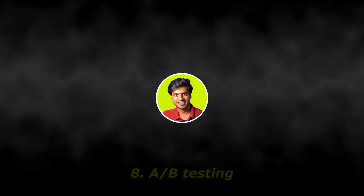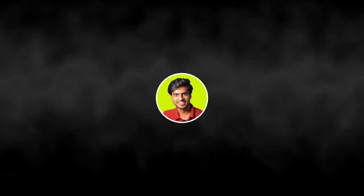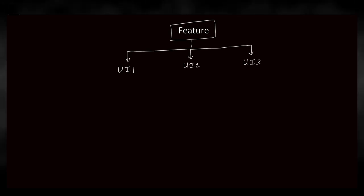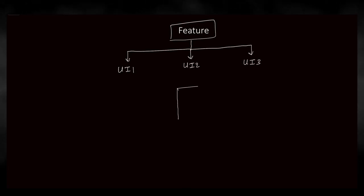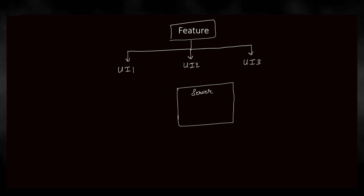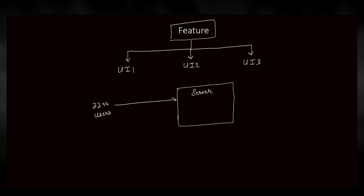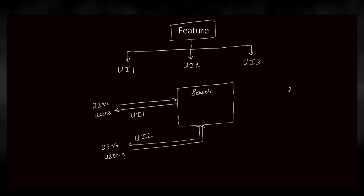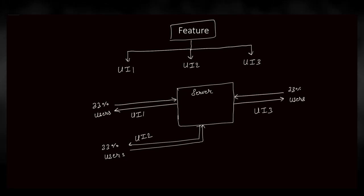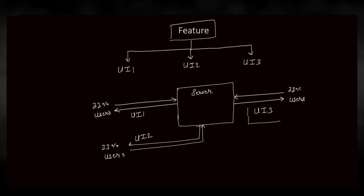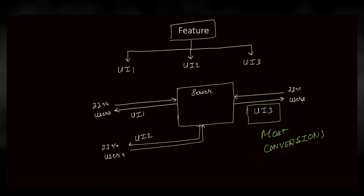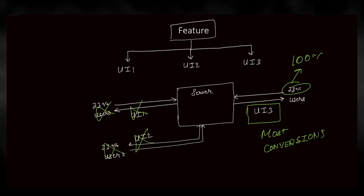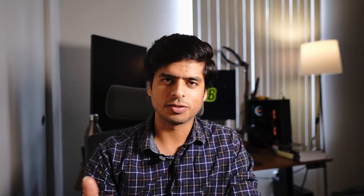Eighth: A/B testing. A/B testing is a software experimentation strategy. If a feature can have three different UI/UX variations, engineers sometimes pack all these into the product and use server-side config to enable them selectively for only a fraction of users. This helps to see if one UI/UX is performing better than others, and if so, that particular version is enabled for the entire user base.